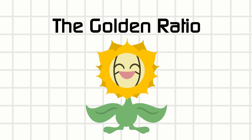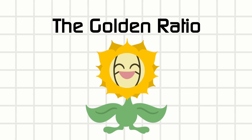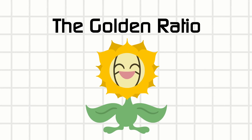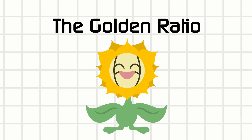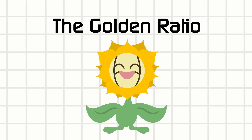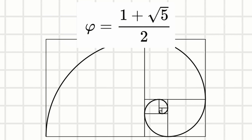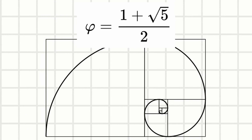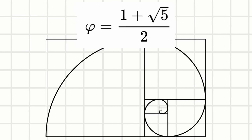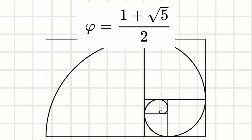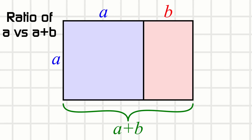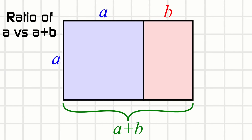The golden ratio — sometimes called the key to artistic beauty. What is this ratio anyway? Mathematically, it's 1 plus the square root of 5, that whole thing divided by 2. But what is the ratio actually? It's a ratio of the length versus width of a special rectangle.